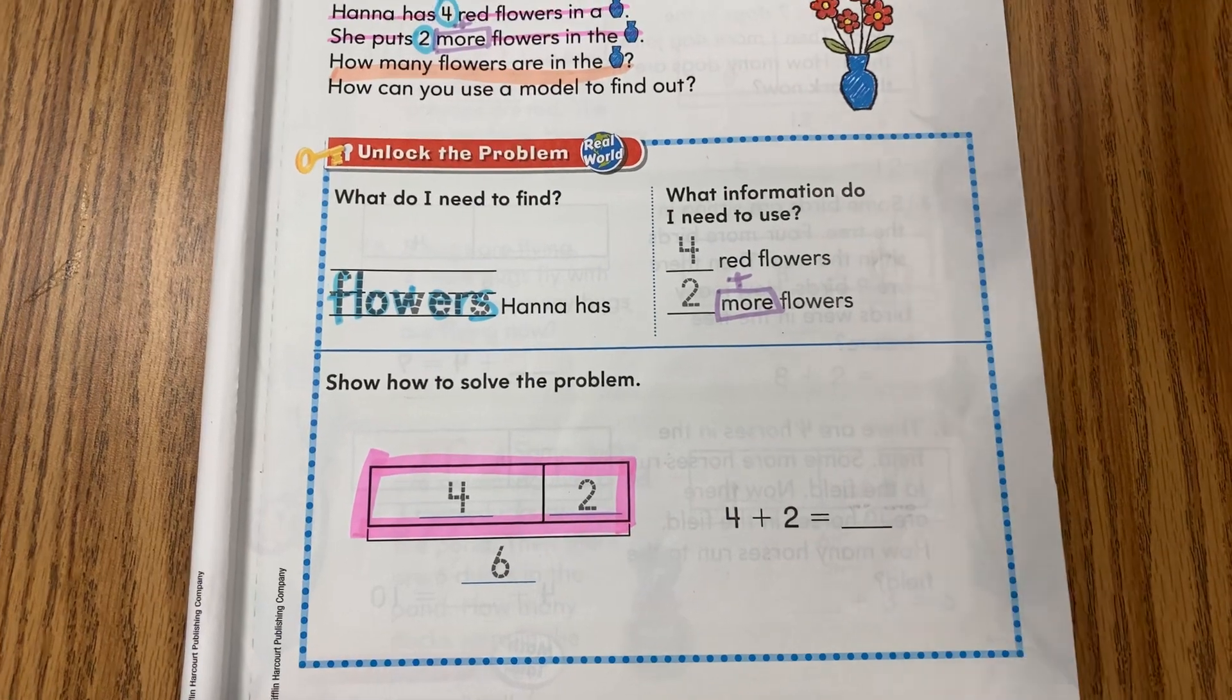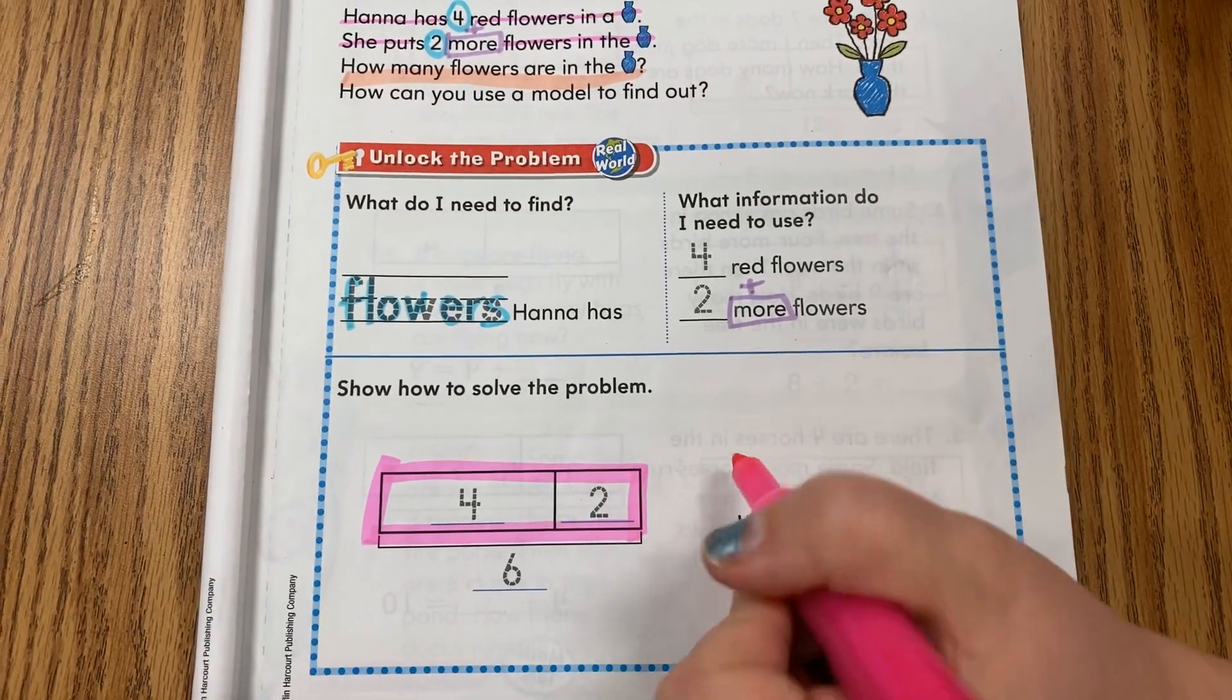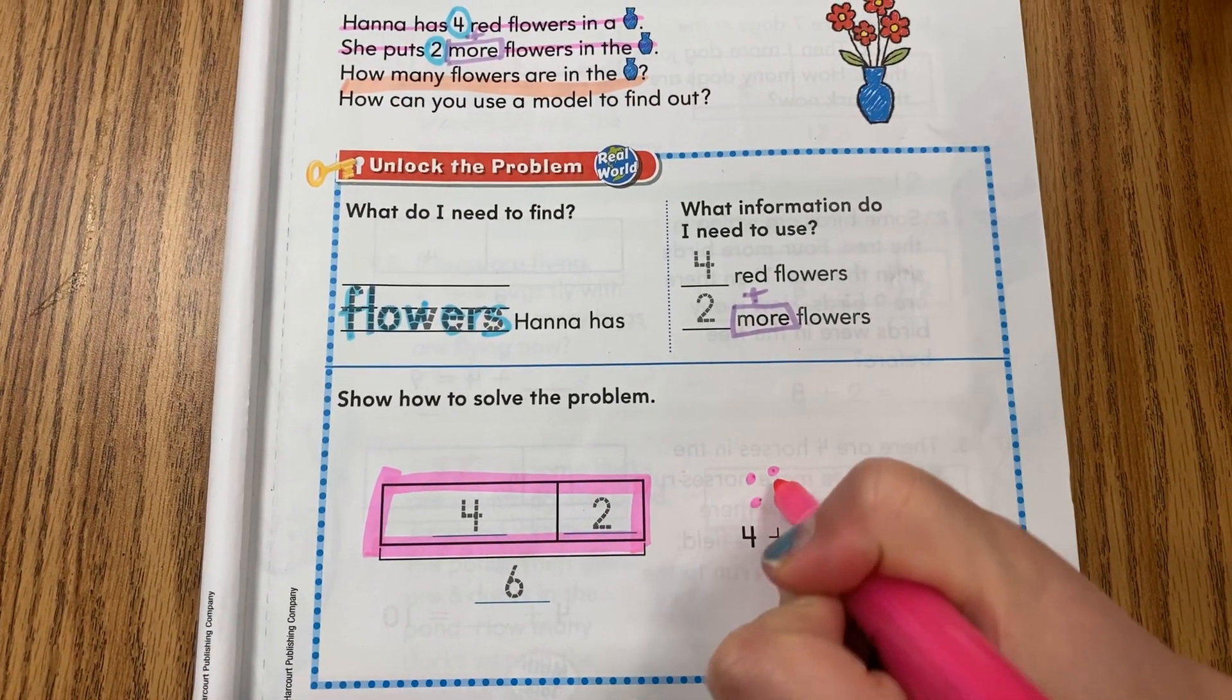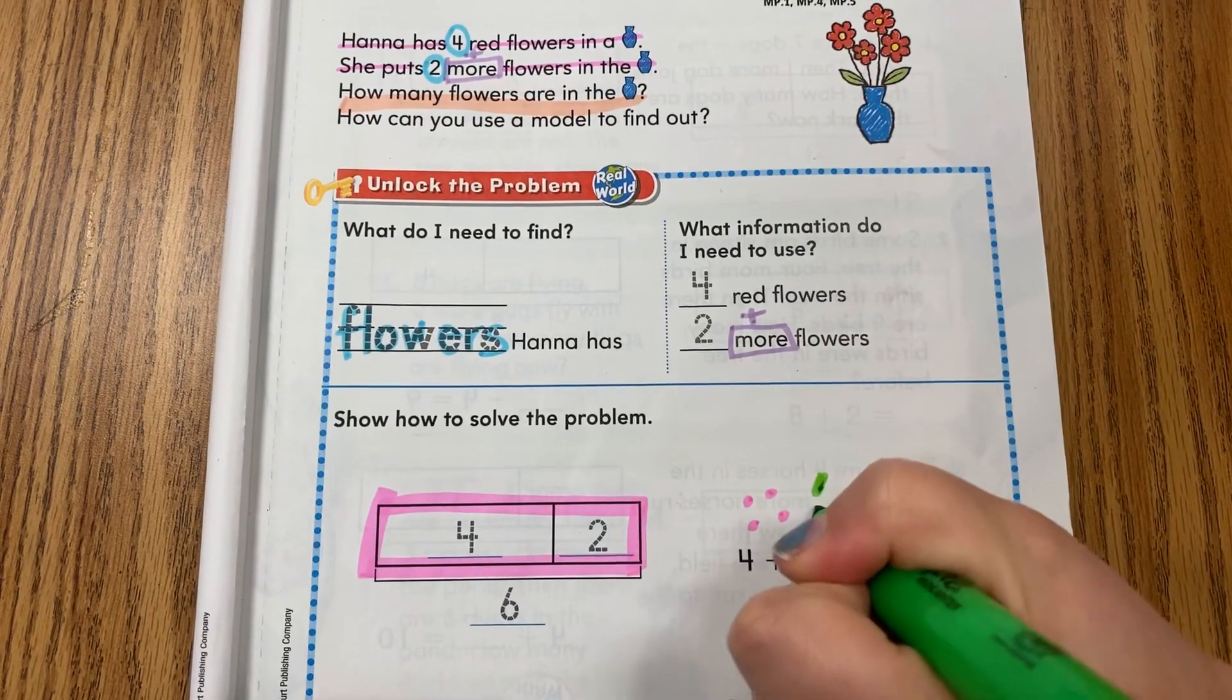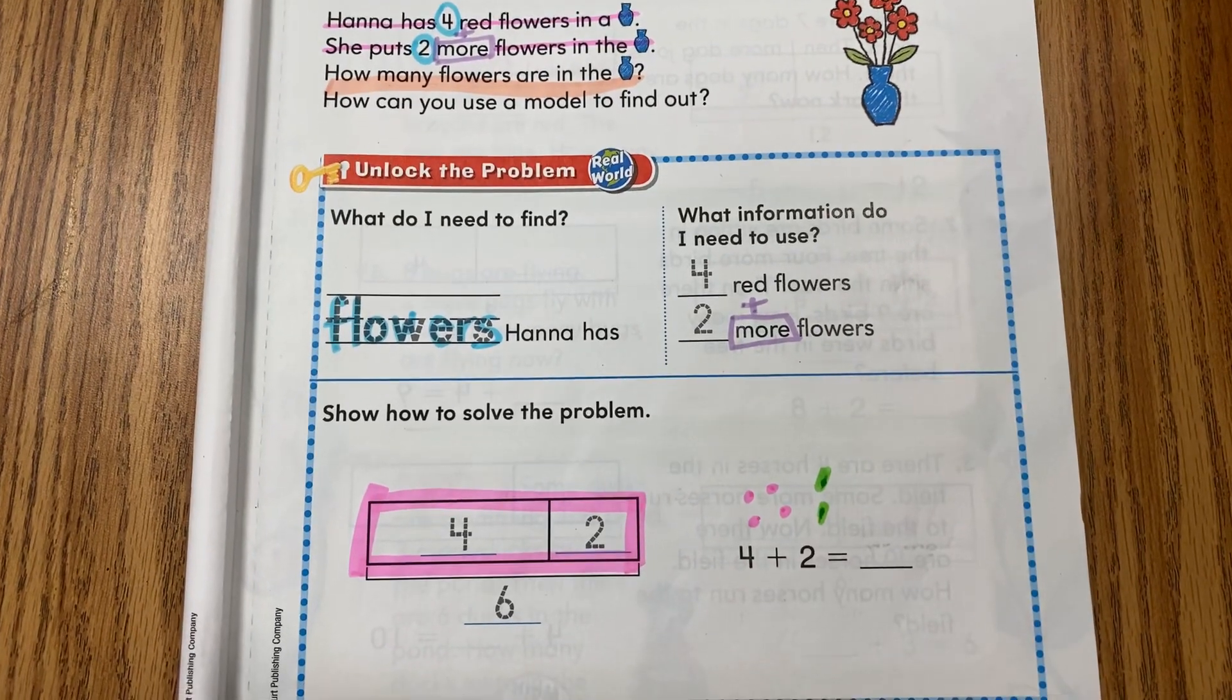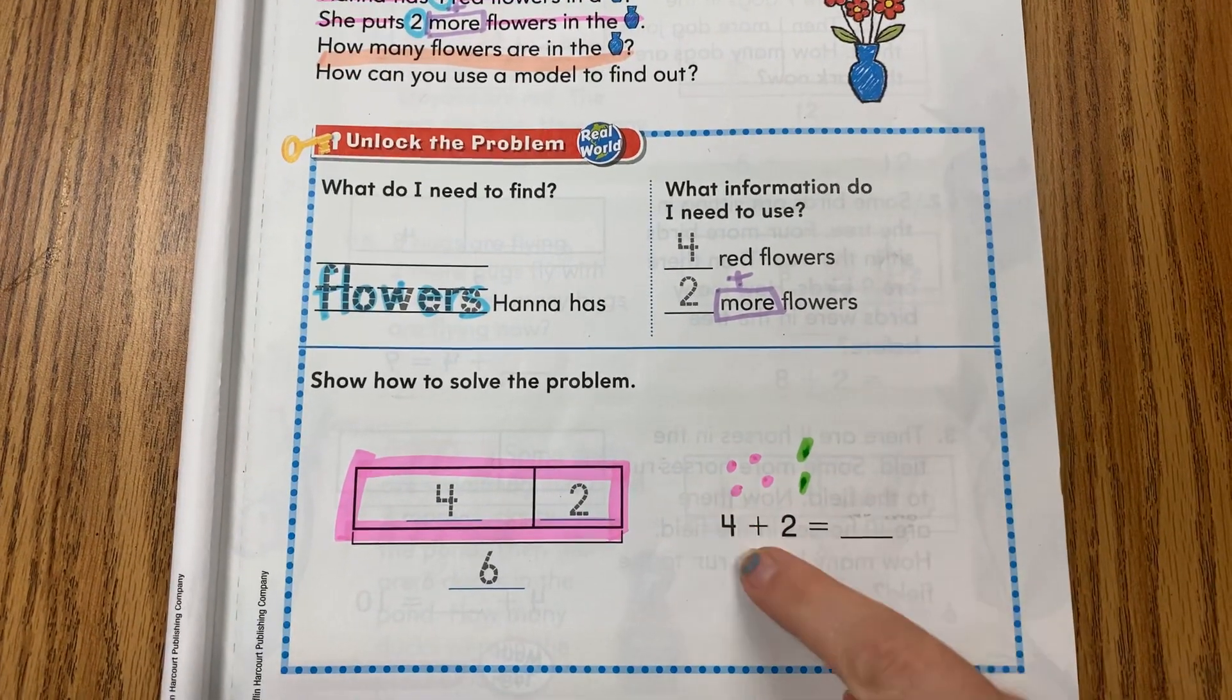As we slide down, you'll see it now says four plus two is the same as blank. So using our model from yesterday, you'll have your four: one, two, three, four.